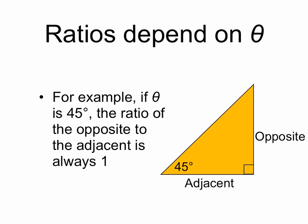The ratio of the opposite to the adjacent is always 1. So no matter what size this triangle is, no matter how you rotate or move it around, if it's a right triangle with an angle theta of 45 degrees, the ratio of opposite to adjacent will always be 1.